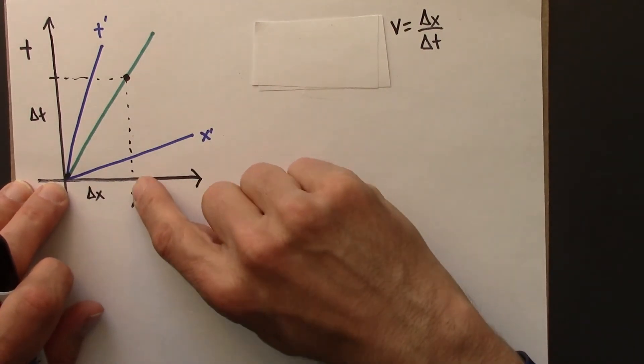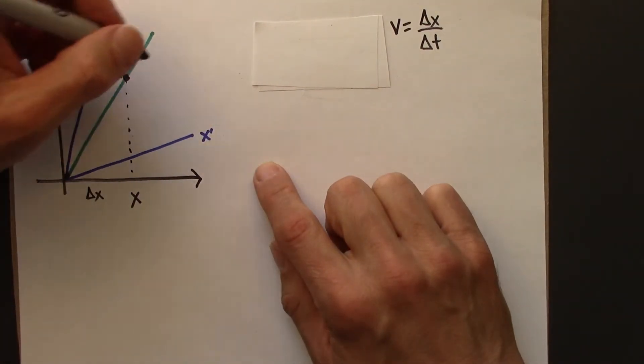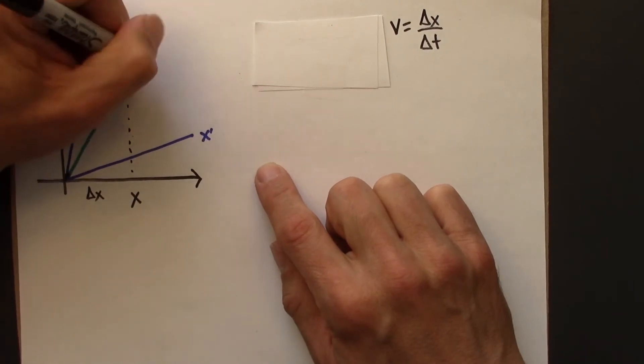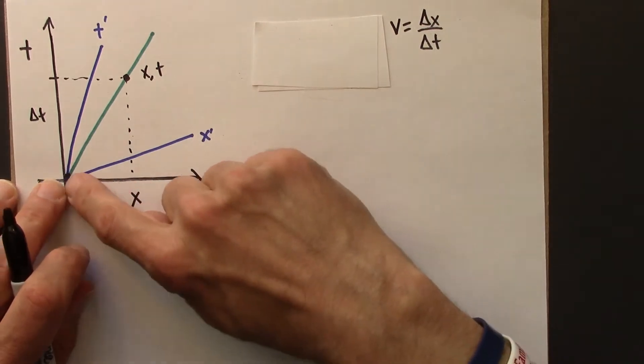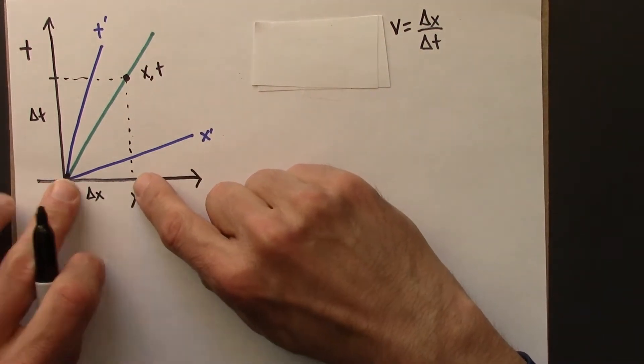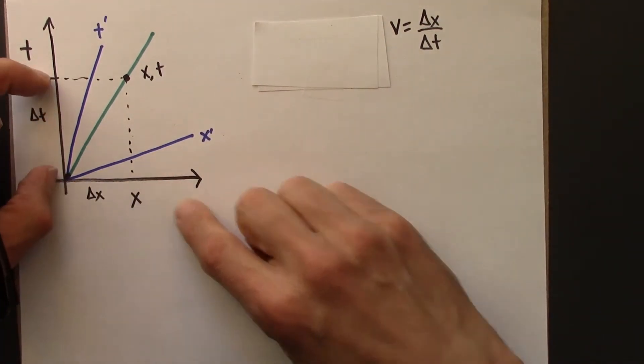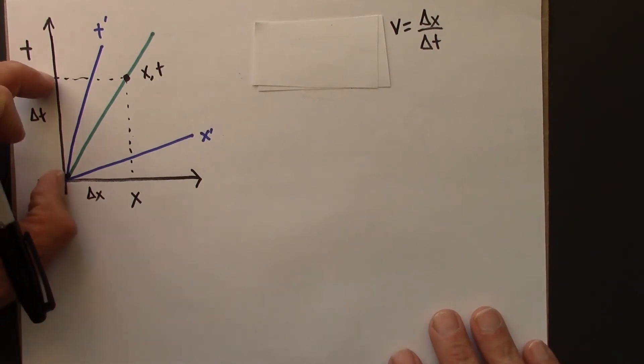So it's delta x over delta t. And another way to think of that delta, let's call this position, these coordinates, x and t. So delta x is really just x, because it's like x minus zero, and delta t is really just t, because it's t minus zero.